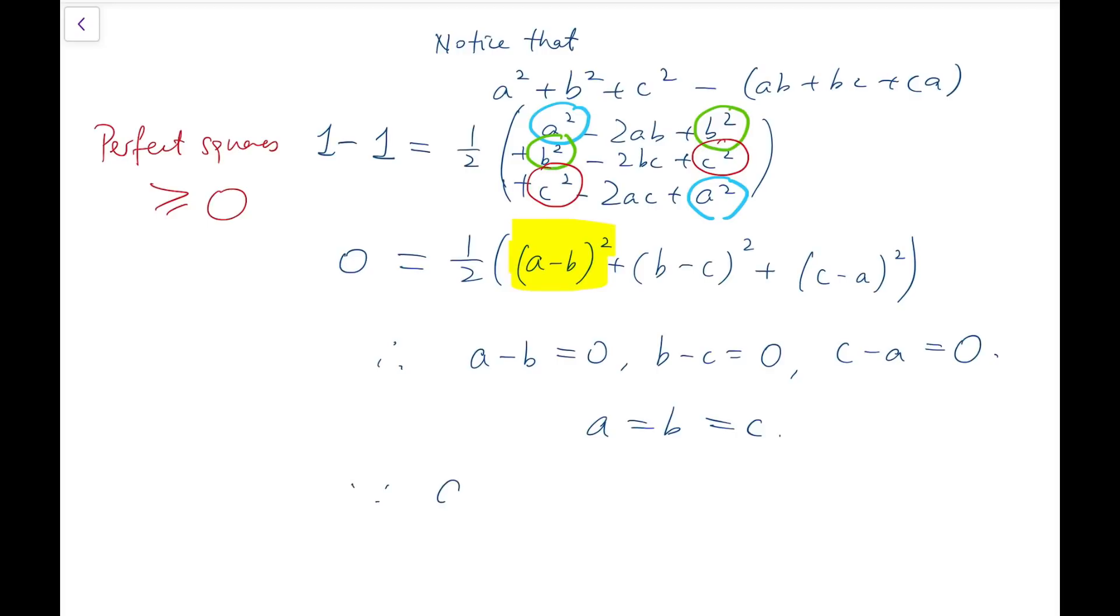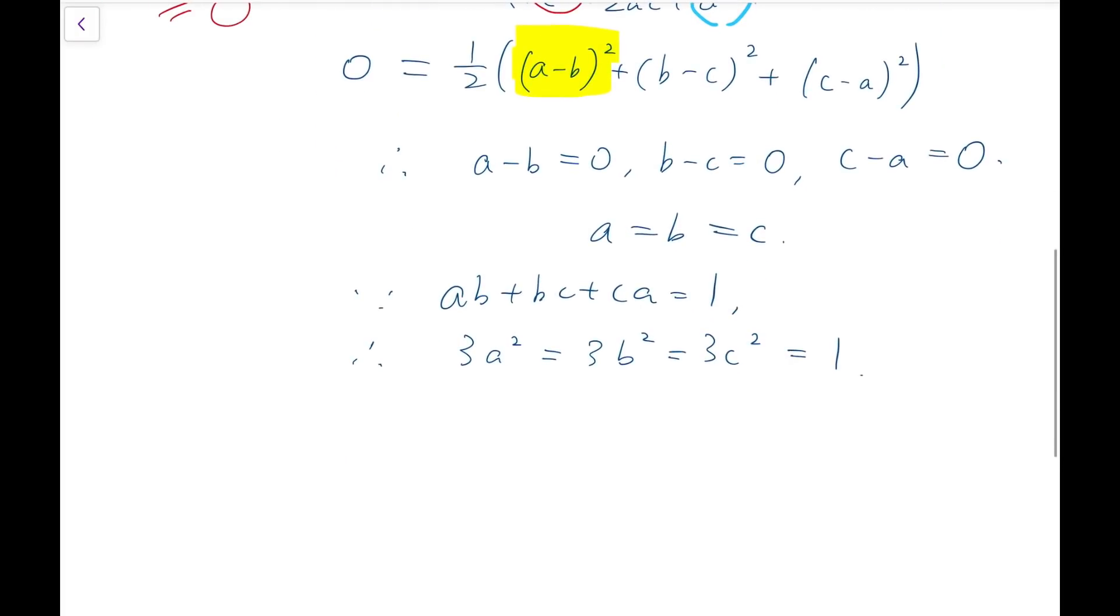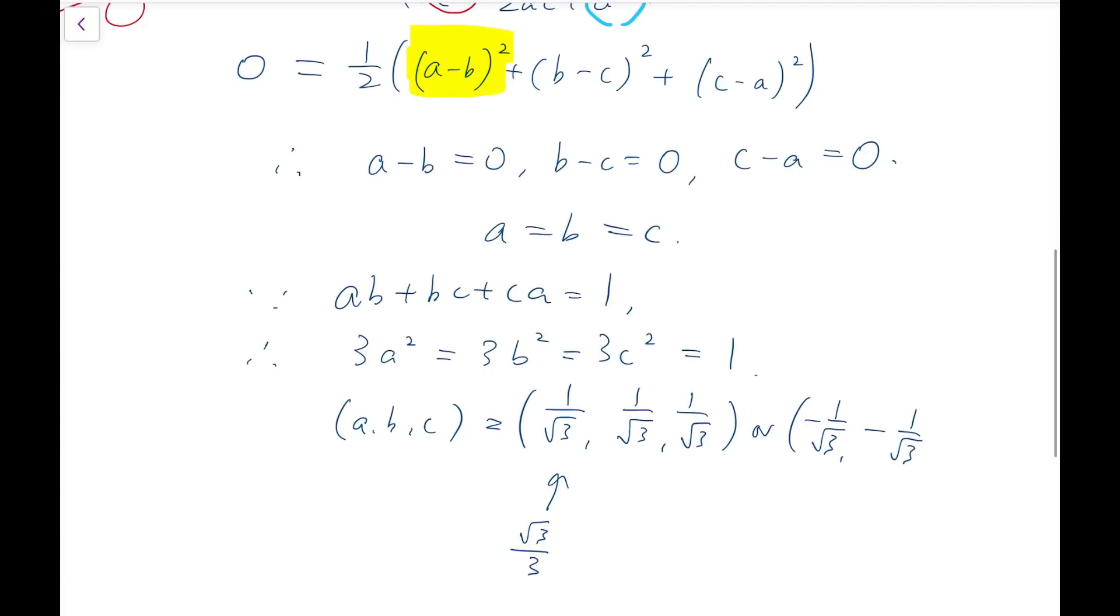Now if we put it back into our first equation, we will have that 3a² equals 3b² equals 3c² equals 1. So we have two more sets of solutions, which are either all 1 over root 3, or you may rationalize it to root 3 over 3 instead, or like minus for each of them. Of course you can rationalize it into minus root 3 over 3.